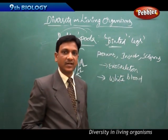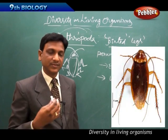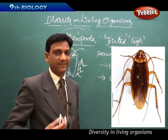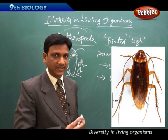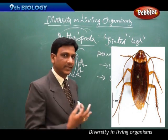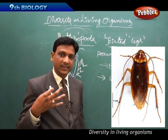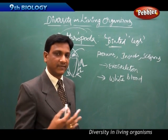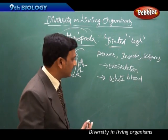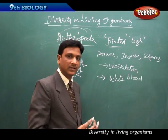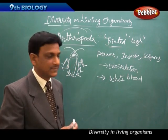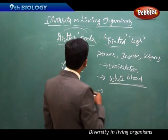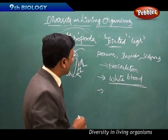Arthropoda have an open circulatory system, unlike our closed circulatory system where blood flows in closed blood vessels. In arthropods, blood flows directly into the body cavity. The coelomic cavity is filled with white-colored blood.